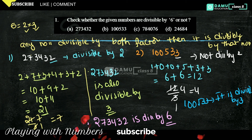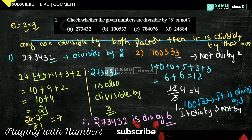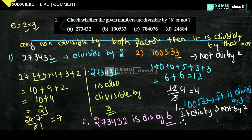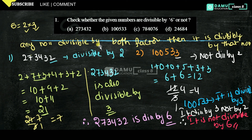100533 is divisible by 3 but not by 2. Since it must be divisible by both 2 and 3 to be divisible by 6, therefore 100533 is not divisible by 6.